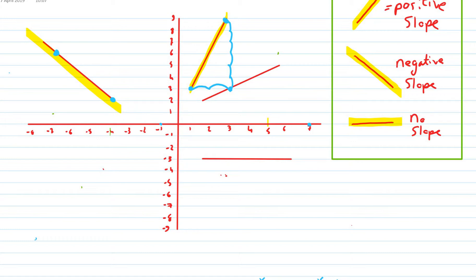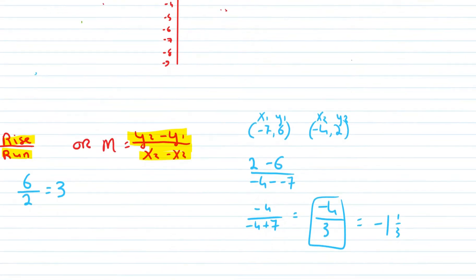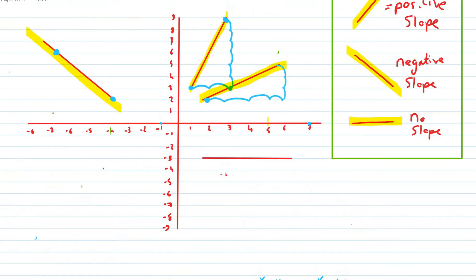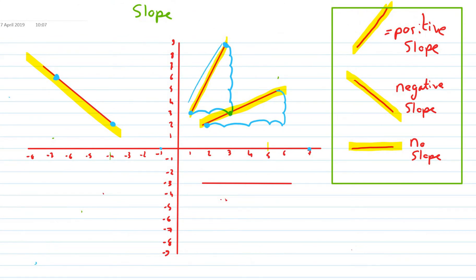Let's do the rise over run method for this next line. The point here is (2, 2). I'm going to run four spaces, then rise three spaces. So run four, rise three — the slope on this is three over four. The slope on the other one was three. So as I said, the steeper the slope, the bigger the number. This steeper slope has the bigger number.